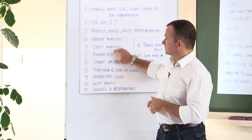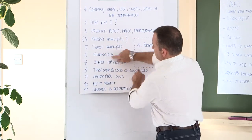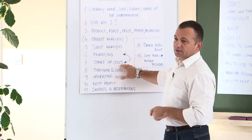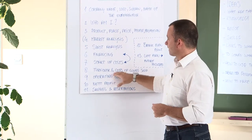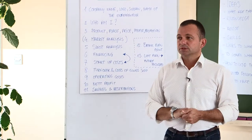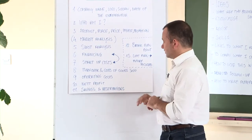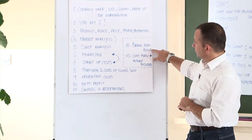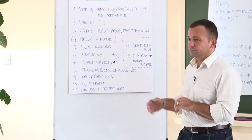Then there is a SWOT analysis — we're going to talk about what that means. Then it's about startup costs and also the financing of all those things which you need when you start up your business. This section is about turnover and the costs of goods sold. And this one is about operating costs, net profit, savings and reservations, and then it continues with break-even point.